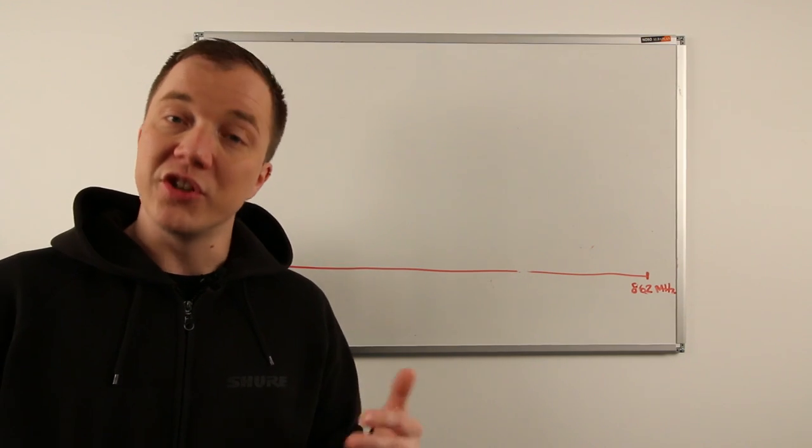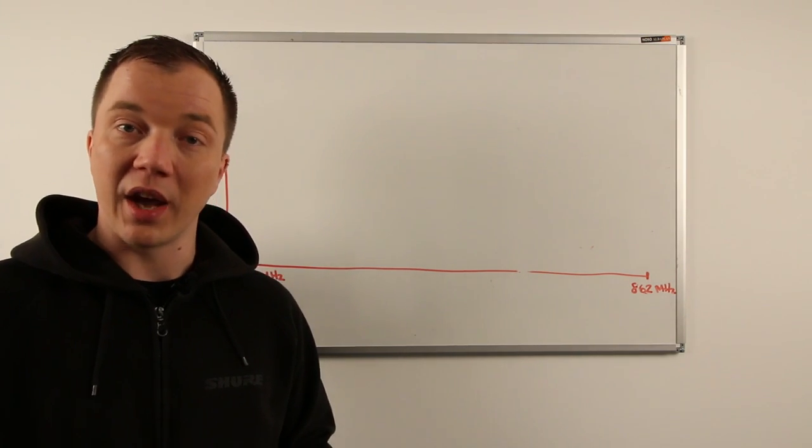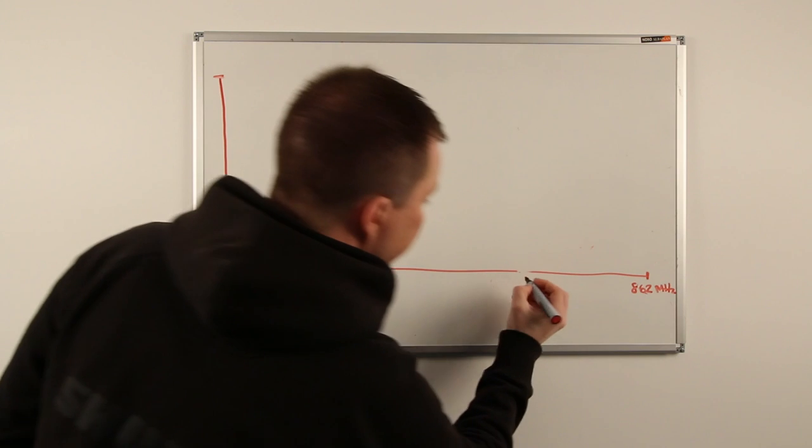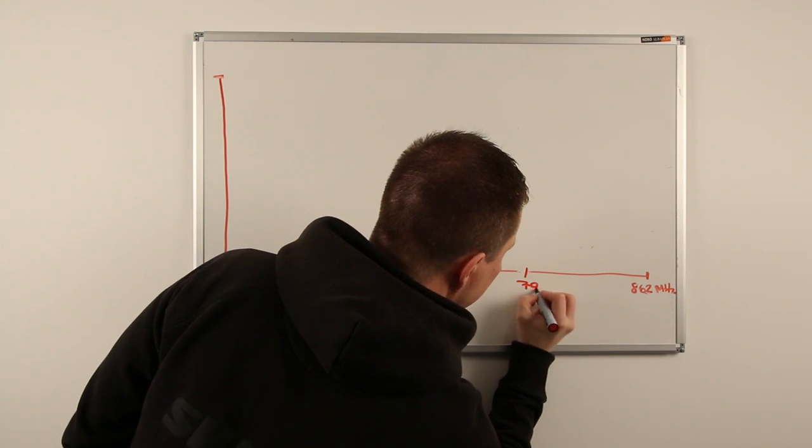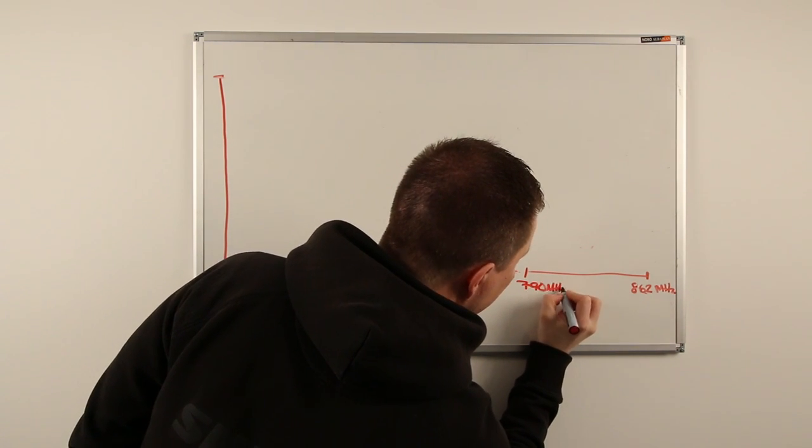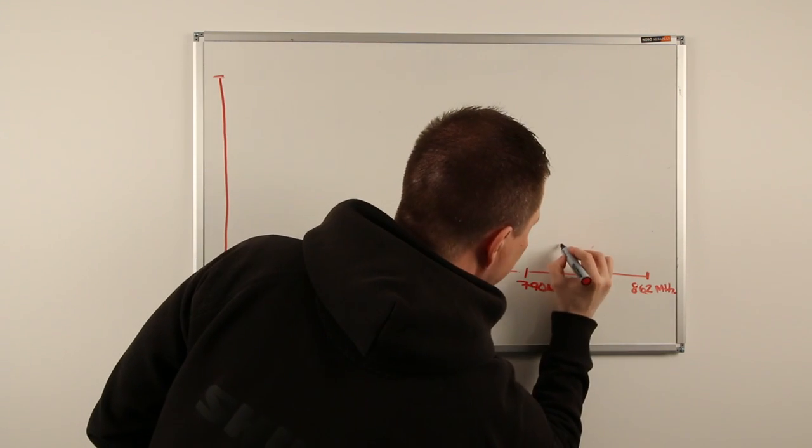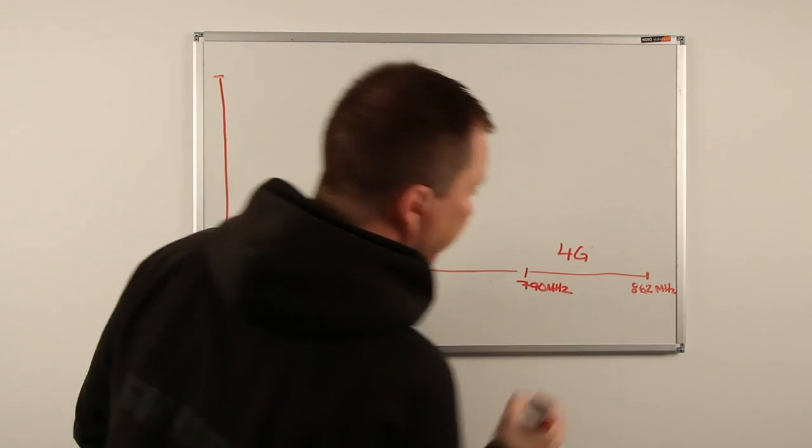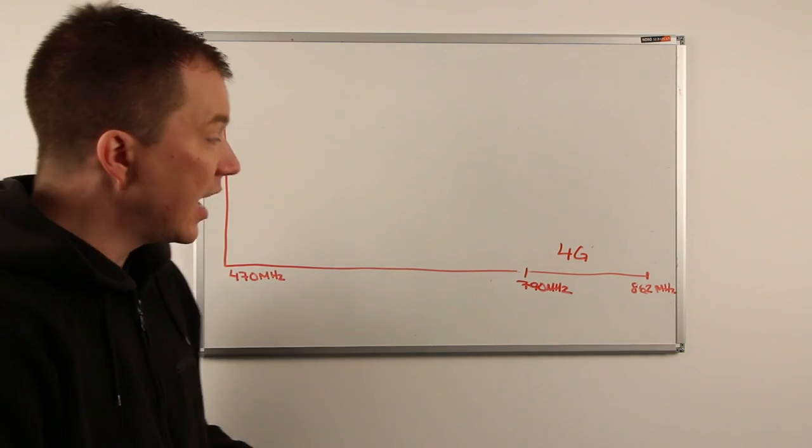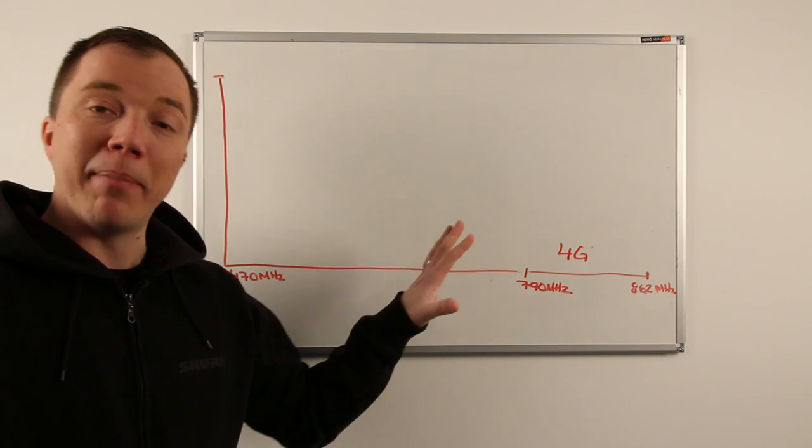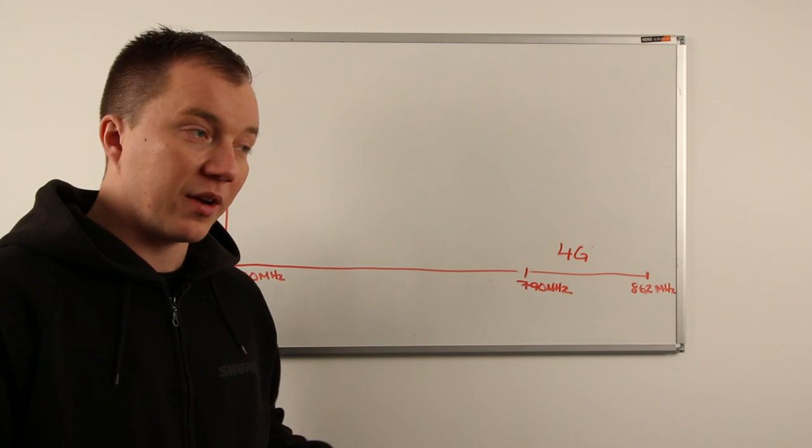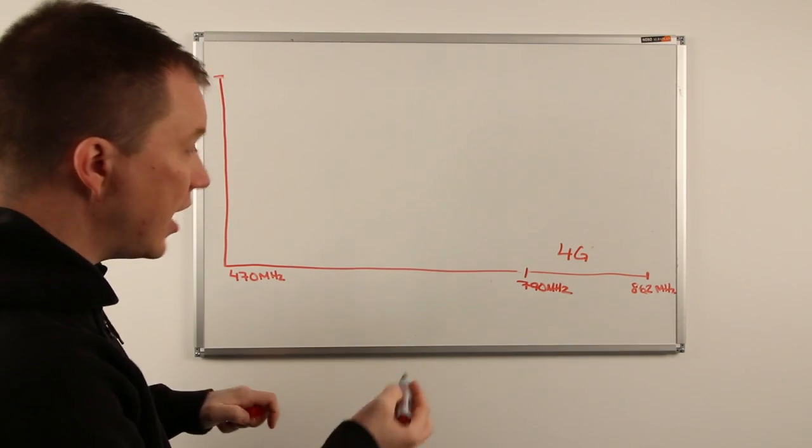So as part of the digital switchover process in the UK, the government auctioned 790 megahertz up to 862 meg and allocated this spectrum for next generation 4G mobile services. Now the reason this impacted users of wireless microphones, and again more of the professional side of it...